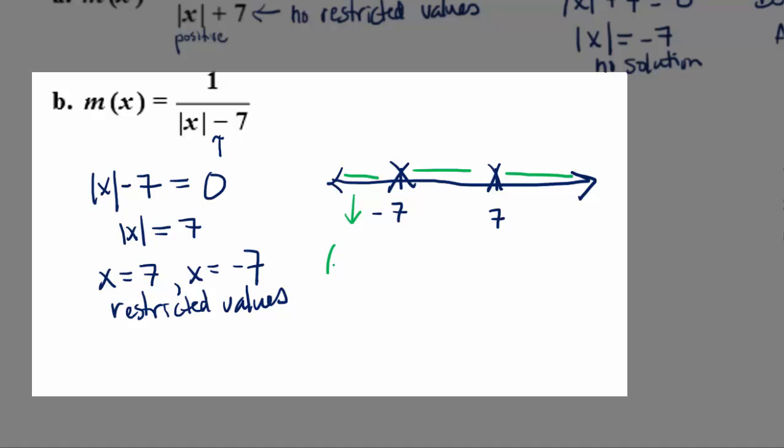So for example, this first segment represents negative infinity to negative 7, but not negative 7. The second segment is negative 7 to 7, not including the end points. And this third segment, well, that's everything from 7 to infinity. So your domain is going to be the union of these intervals.